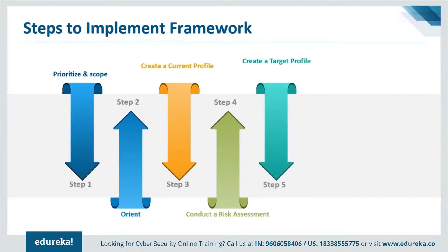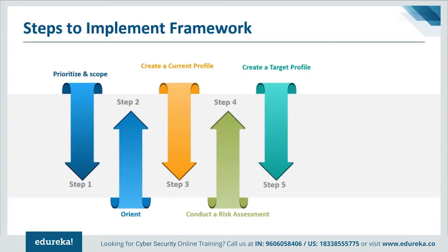Step five is to create a target profile. The organization creates a target profile that focuses on the assessment of the framework categories and subcategories, describing the organization's desired cybersecurity outcomes. Organizations may develop their own additional categories and subcategories to account for unique organizational risks, and may also consider influences and requirements of external stakeholders such as sector entities, customers, and business partners when creating a target profile.